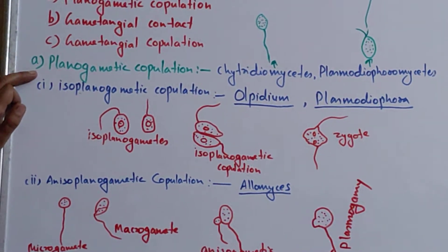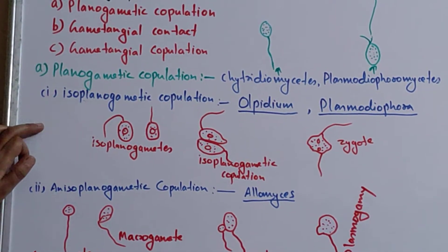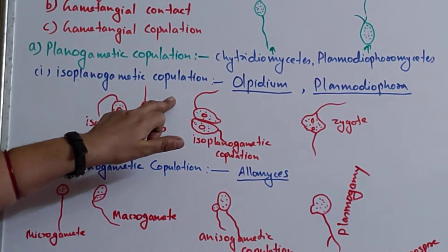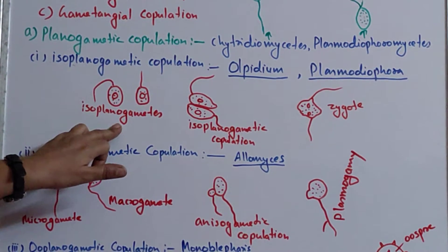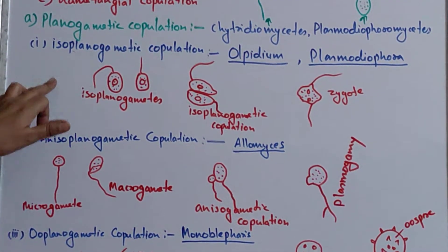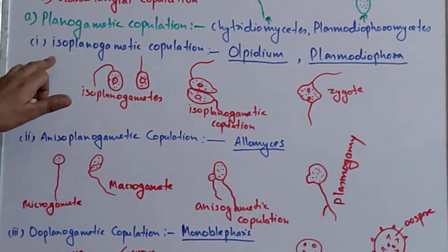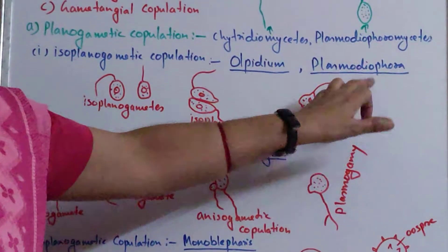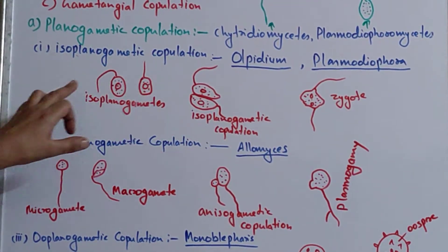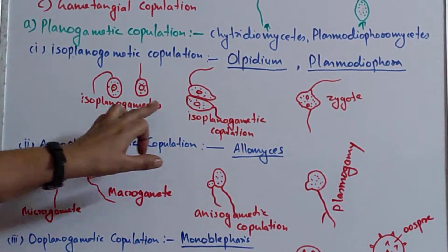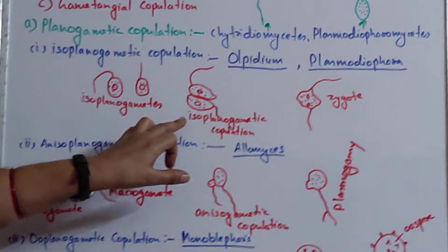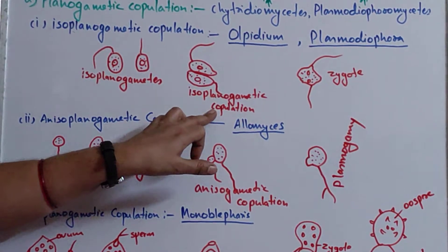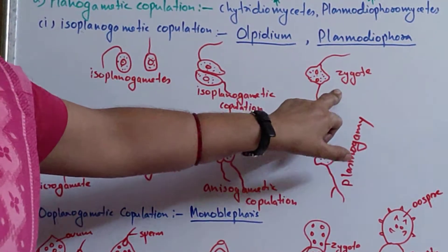Planogametic copulation is again of different types. The first is isoplanogametic copulation, which means the fusing gametes are motile and morphologically similar. An example of isoplanogametic copulation is found in Olpidium and Plasmodiophora. These isoplanogametes are morphologically very similar, and after their fusion, a zygote is formed.